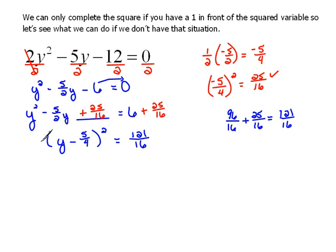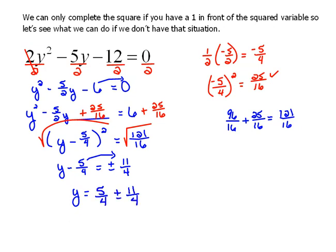And now we're back to, we have to undo the square. So we're going to apply the square root property. This becomes y - 5/4 equals, here we can do the square root of 121, which would be 11. And the square root of 16 would be 4. So we have plus or minus 11/4. And now we need to get y alone. So we're going to have to add 5/4 to both sides. So y equals positive 5/4 plus or minus 11/4.